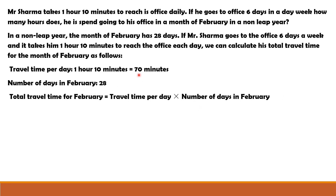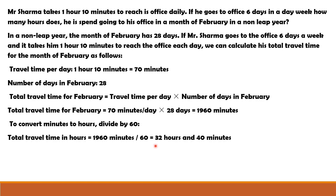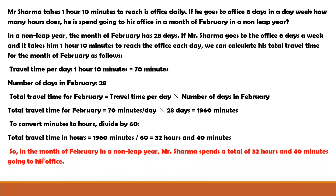If we multiply 70 by 28, we will be able to find out the total travel time for February. 70 minutes per day multiplied by 28 days equals 1960 minutes. To convert this into hours and minutes, we need to divide by 60, because 1 hour equals 60 minutes. When we convert 1960 by 60, we get the answer as 32 hours and 40 minutes. So, in the month of February, Mr. Sharma spends a total of 32 hours and 40 minutes going to office.